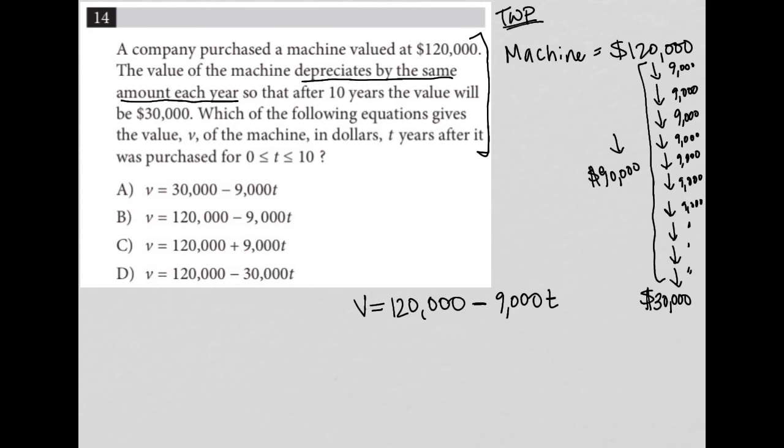So this equation would help me figure out what is the value at the end of two years or three years or four years or five years. I know what's going to happen at 10 years, but what if I wanted to know what was happening at any of these stages?